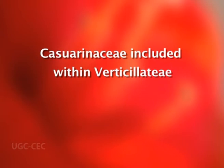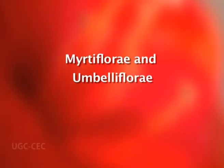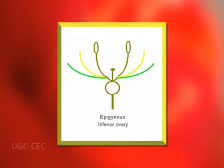Casuarinaceae, included within Verticillatae, is considered primitive on account of cleistogamy. The dichlamydeous polypetalous families start with Ranales, in which the flowers are spirocyclic or cyclic and hypogynous. Apocarpy is recognized as primitive. The polypetalous orders end with Myrtiflorae and Umbelliflorae, which have epigynous flowers.